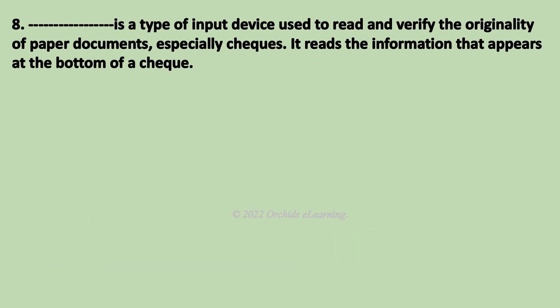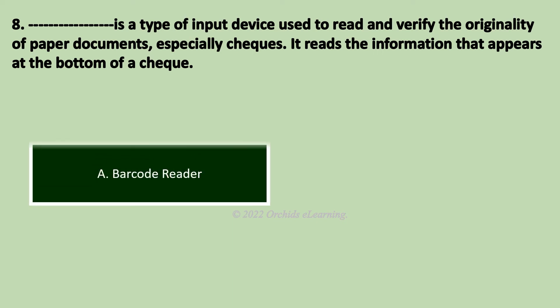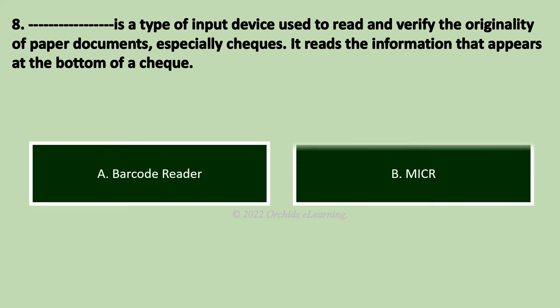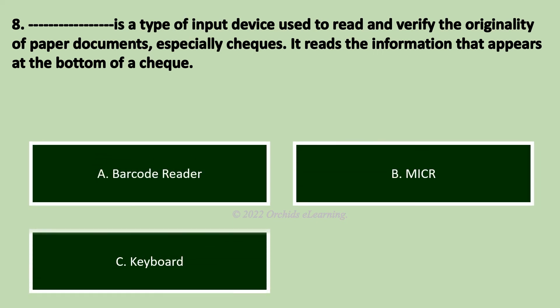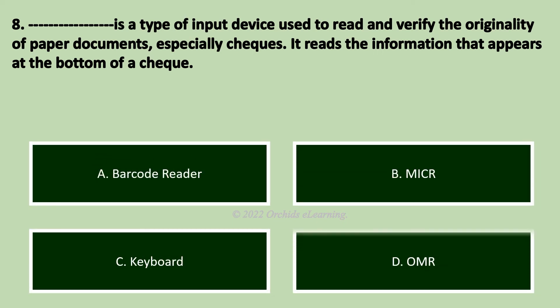Dash is a type of input device used to read and verify the originality of paper documents, especially checks. It reads the information that appears at the bottom of a check. This refers to MICR.